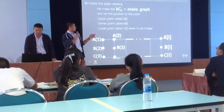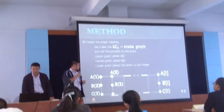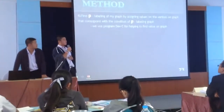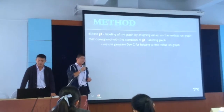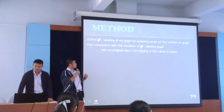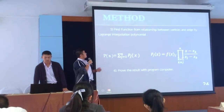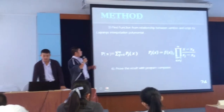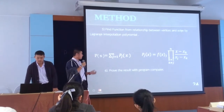First, upper point called a_i, this point called b_i, and lower point called c_i, where i is an integer. First, try low labeling of the graph by assigning values on the vertices of the graph, corresponding to the definition of low labeling graph. We use program DFC++ to help the project. Find a function from a range between edges and vertices from Lagrange Interpolation Polynomial. And last, we prove the result with the computer program.